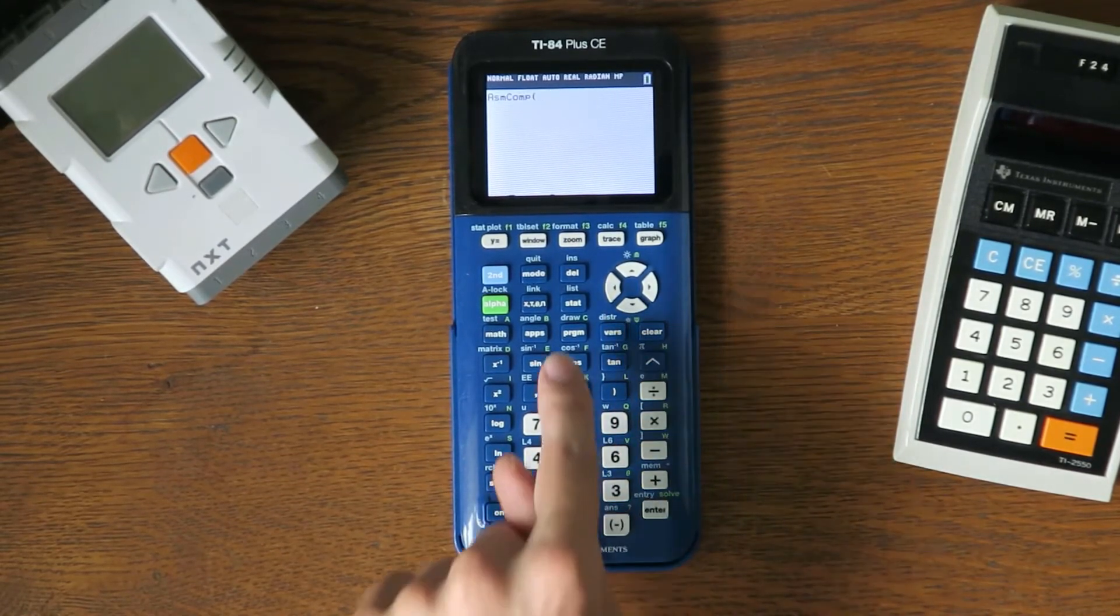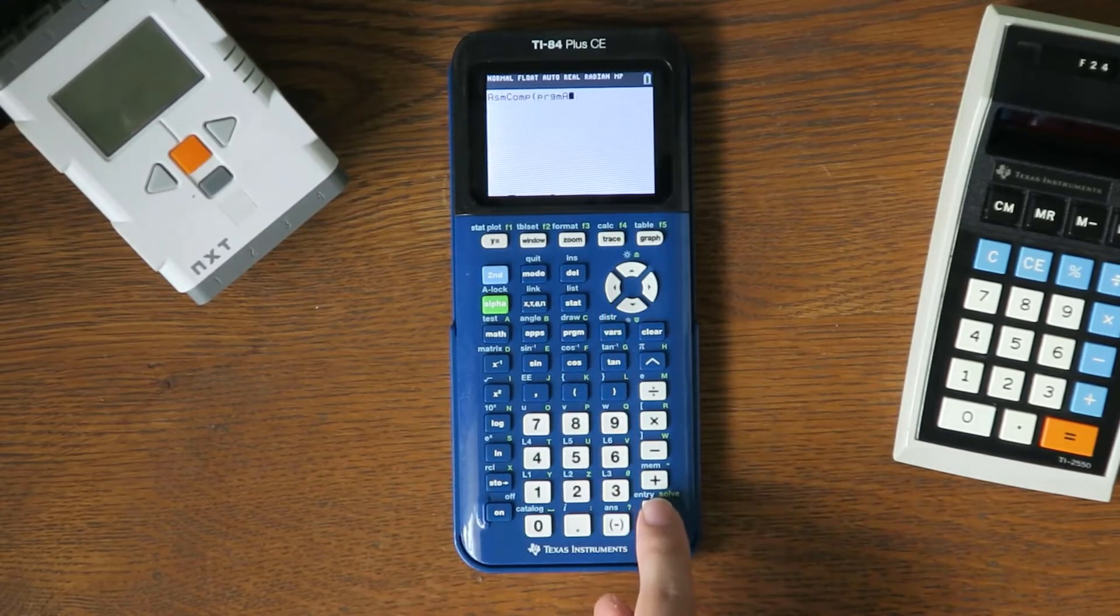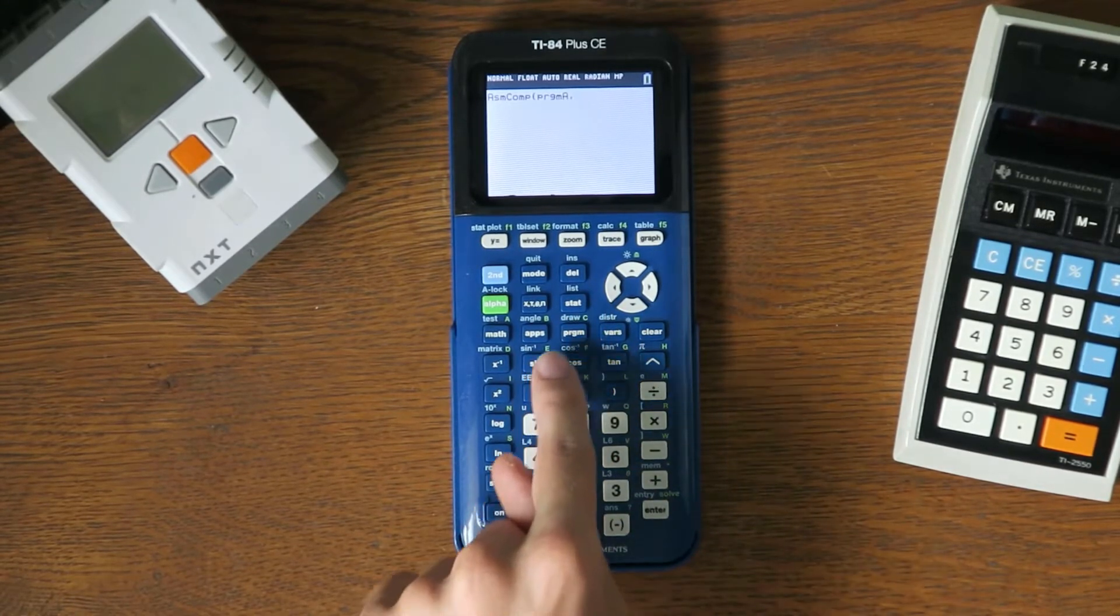Press program, then select program A. Now type in a comma, then press program again and select program A again.